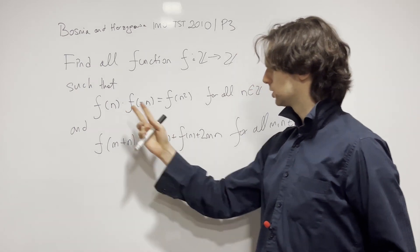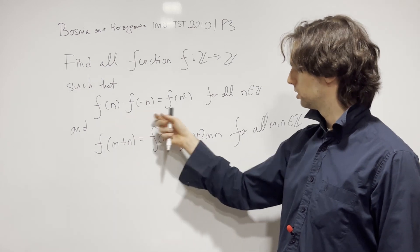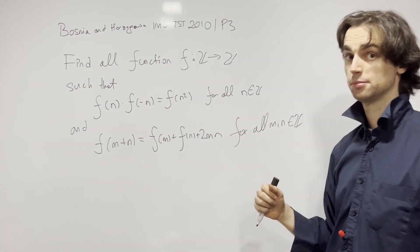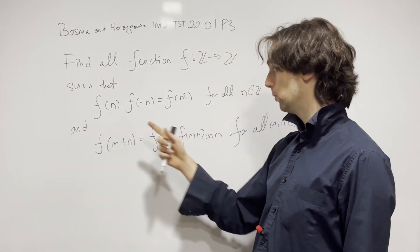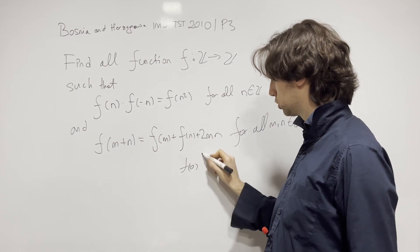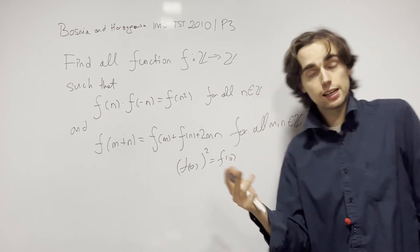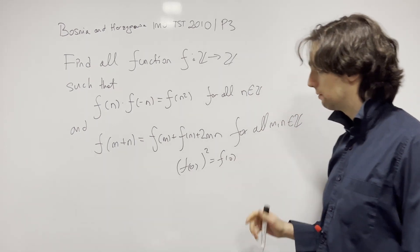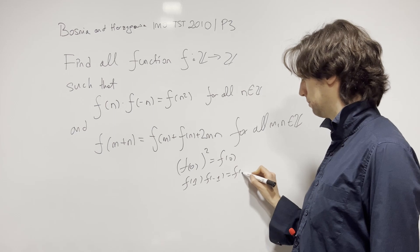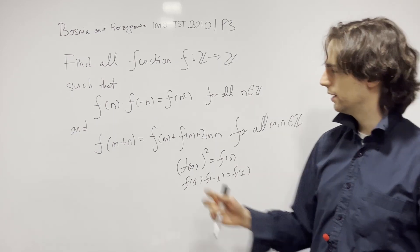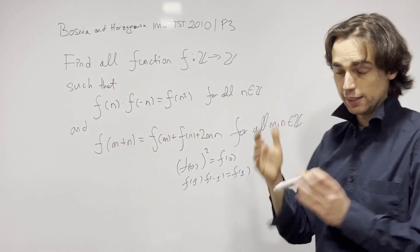First, this condition. I'm looking at it and thinking about what I can plug in to get something useful. If I plug in n=0, I'll get f(0)² = f(0). And if I plug in n=1, I'll get f(1)·f(-1) = f(1). It does make sense to plug in both f(1) and f(-1), since they give the same thing — you won't get anything new.